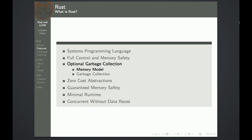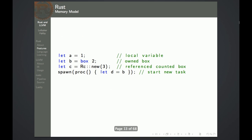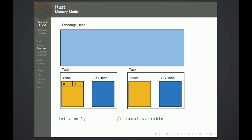Rust features an optional garbage collector. To understand it, we first look at the memory model of Rust. Here we see the different important pieces of memory. You have an exchange heap which is global, so each thread can access it. Each task has their own stack and a garbage collected heap, so there's no global garbage collected heap. Let's look at some examples where things appear in memory. The first one is simple — it's allocated on the stack, on the task local stack.